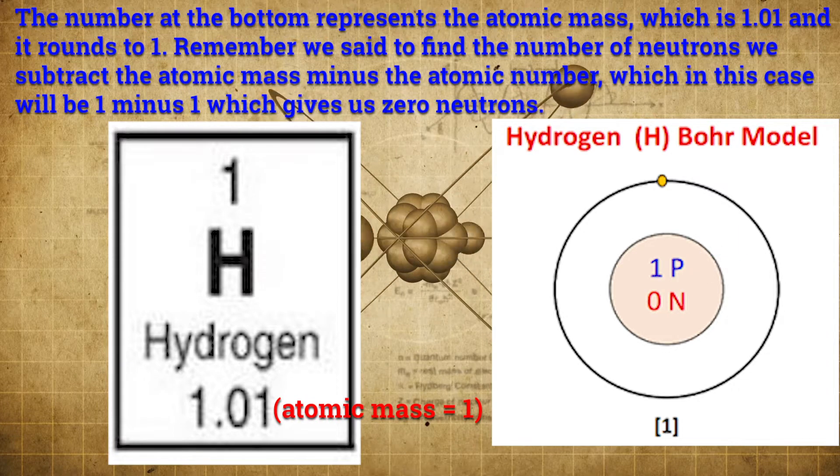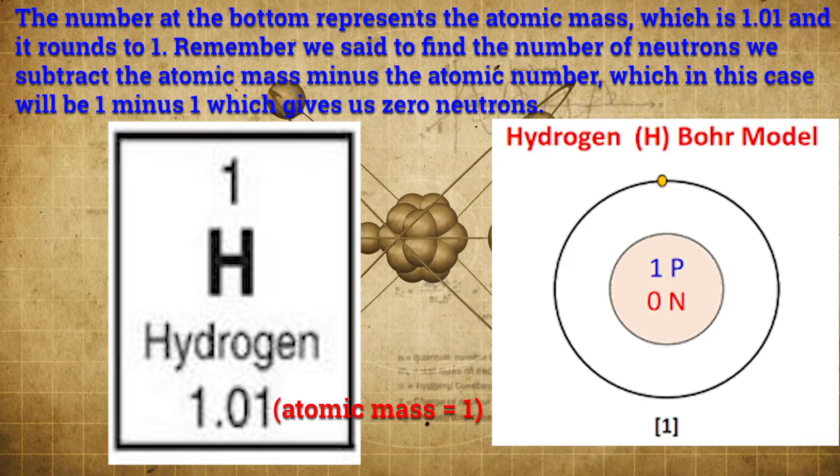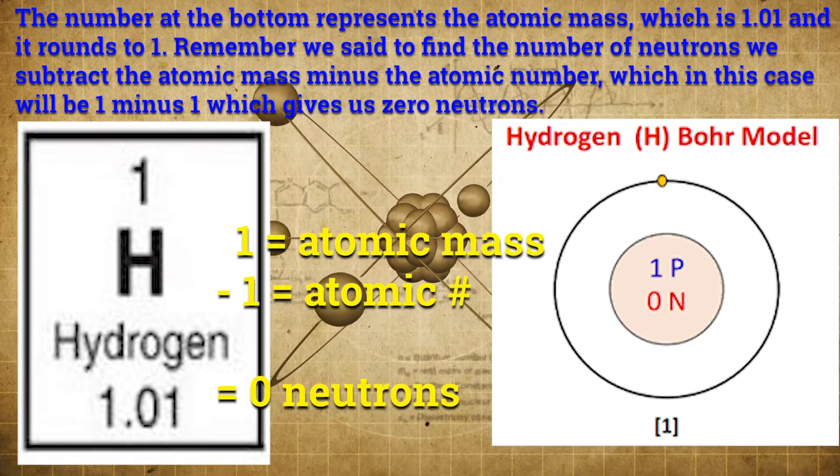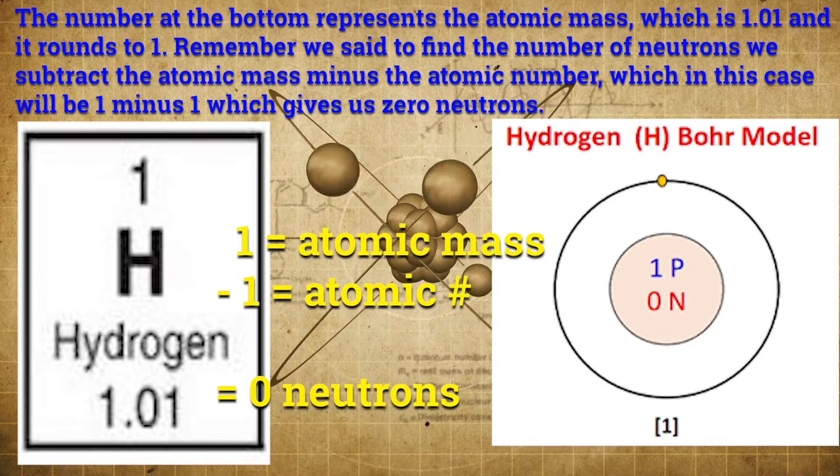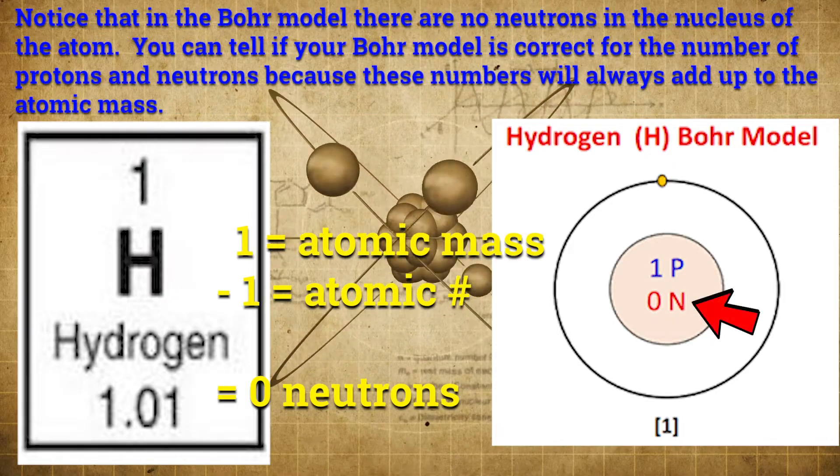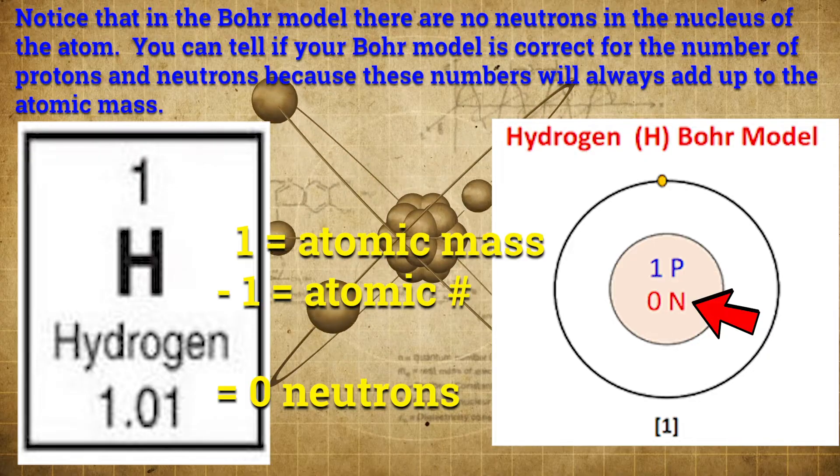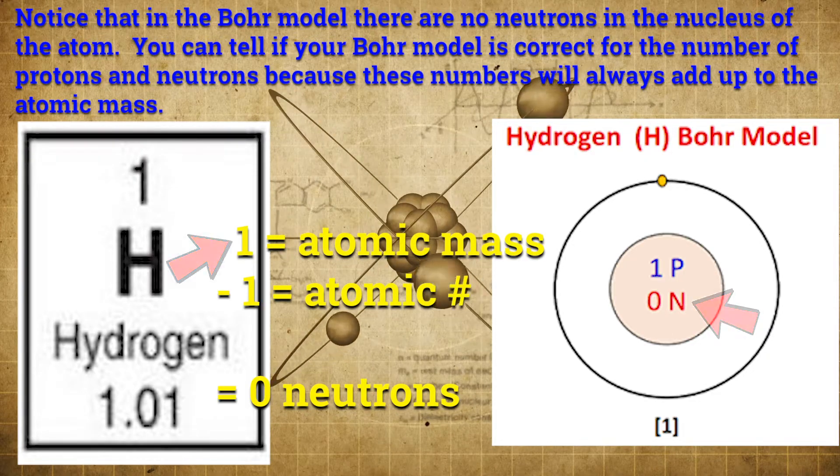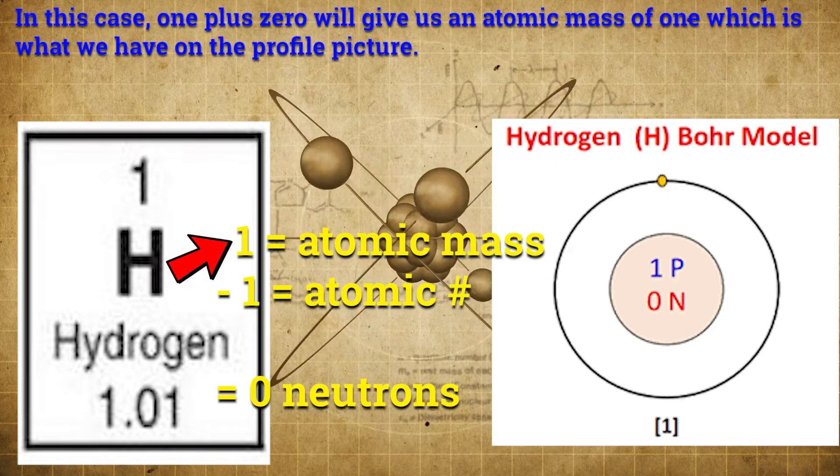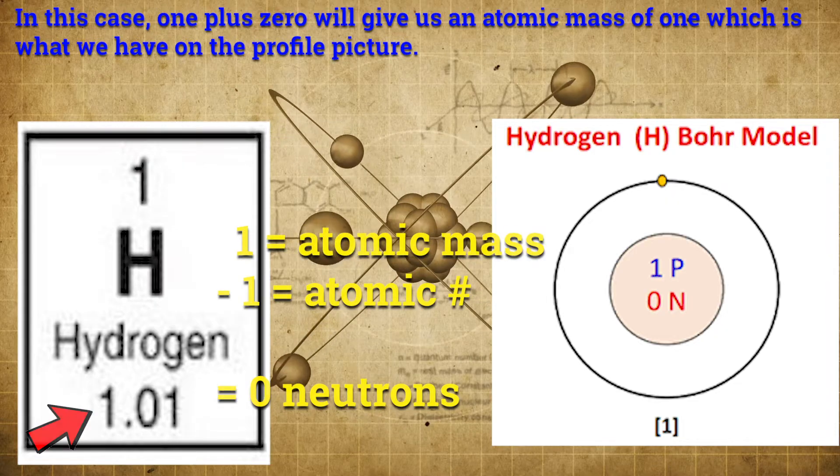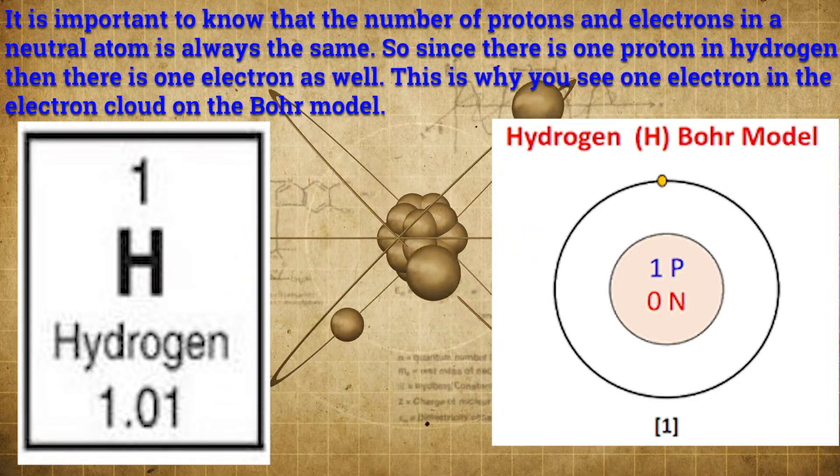The number at the bottom represents the atomic mass, which is 1.01, and it rounds to 1. Remember, we said to find the number of neutrons, we subtract the atomic mass minus the atomic number, which in this case would be 1 minus 1, which gives us 0 neutrons. Notice that in the Bohr model, there are no neutrons in the nucleus of the atom. You can tell if your Bohr model is correct for the number of protons and neutrons, because these numbers will always add up to the atomic mass. In this case, 1 plus 0 will give us an atomic mass of 1, which is what we have in the profile picture.